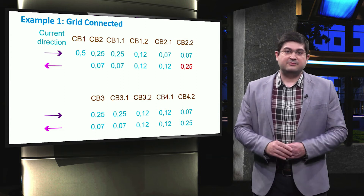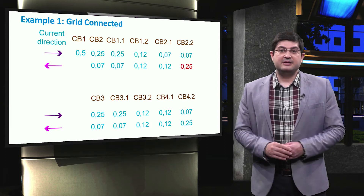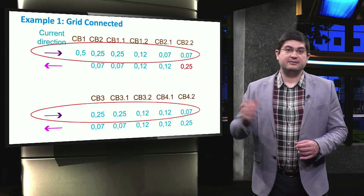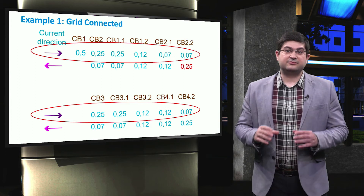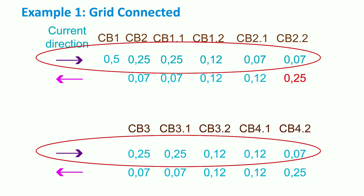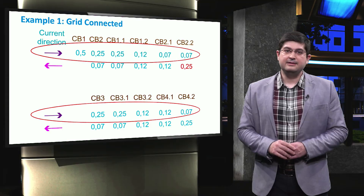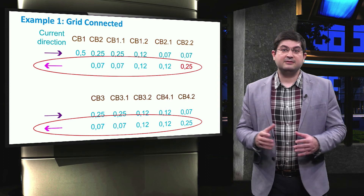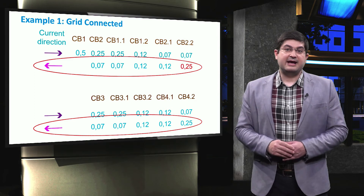In this figure, we show an example of the typical time settings of the directional relays for the first case where switchboards 2 and 4 were disconnected. If the direction of the fault current is from left to right, then the tripping time settings of the relays will reduce from the head of the feeder at circuit breaker 1 to the end of the feeder at circuit breaker 2.2. For instance, if a fault occurs at the end of the feeder, circuit breaker 2.2 will disconnect first after 0.07 seconds. If circuit breaker 2.2 fails to disconnect, then circuit breaker 1.2 will disconnect within 0.12 seconds. On the opposite direction, when the fault current direction is from right to left, the time settings will reduce from the end of the feeder at circuit breaker 2.2 to the head of the feeder at circuit breaker 2.